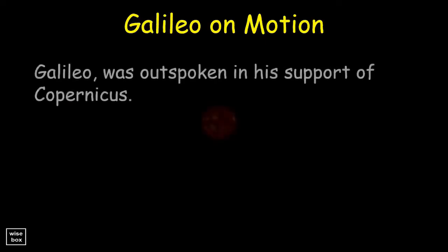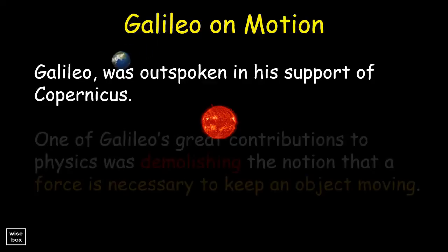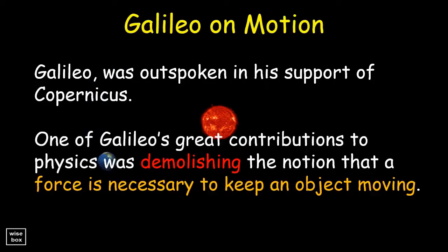Galileo was also outspoken in his support of Copernicus, who proposed that the earth is continuously moving around the sun. In fact, one of Galileo's great contributions to physics was demolishing the notion that a force is necessary to keep an object moving.